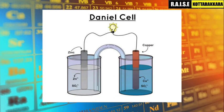Without a salt bridge, electricity will not form. So we introduce a salt bridge. The two beakers represent the two half cells. The half cells are connected by an internal salt bridge, and a galvanometer or bulb acts as the external circuit.